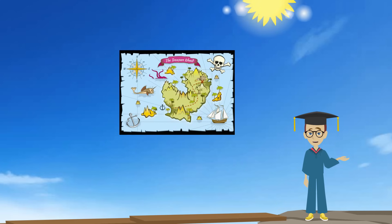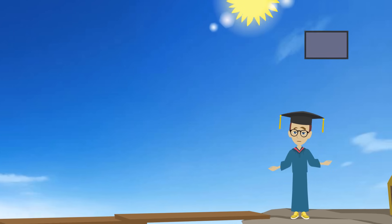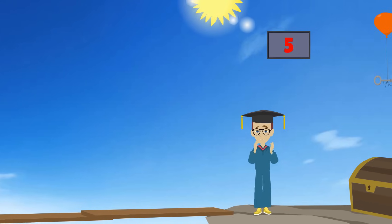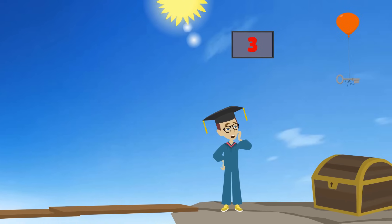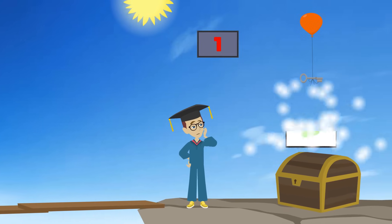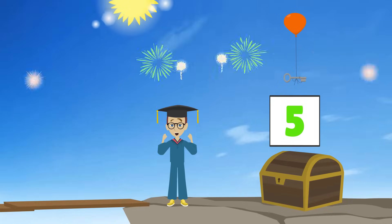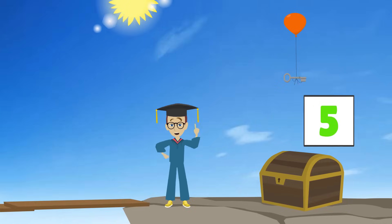The treasure map says that we gotta know how many pink rabbits are in the canyon. Quick, we gotta answer before the time runs out. I should have paid more attention. But I think it's five. Yes, we guessed right. Now let's see the treasure.